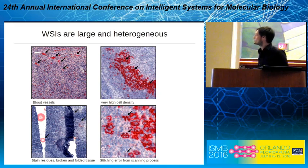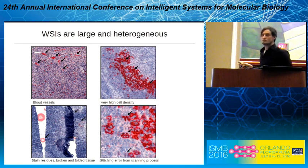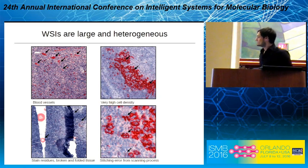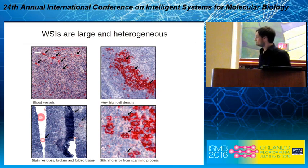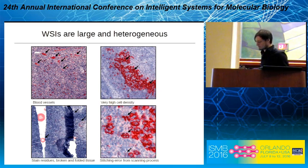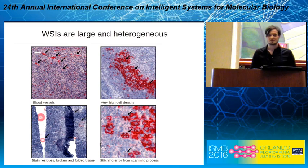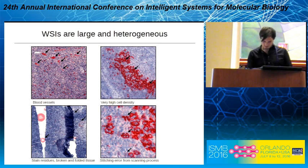Looking at tiles where cell detection didn't work so well — in whole slide images you can always be surprised by what's in there. Some common challenging examples: blood vessels lying between cells; very high cell density, which makes it hard to distinguish individual cells — even for humans it's not possible to determine the size or shape of a single cell; stain residues and broken or folded tissue; and artifacts from the scanning process where cells are duplicated. You can also find lots of other unusual things — for example, pathologists have written comments on the slide.